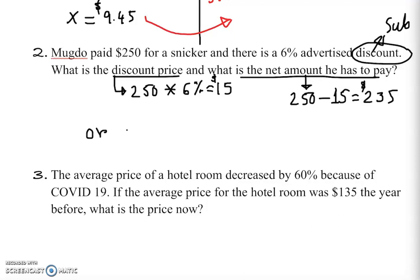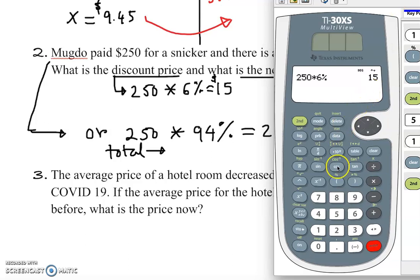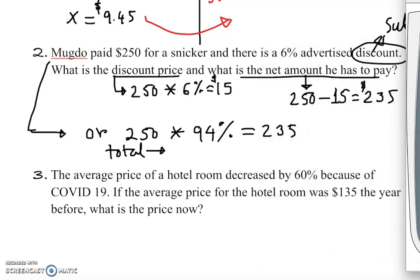Alternatively, since it's a discount, you can do 100% minus 6%, which equals 94%. Then multiply $250 times 94% — or 0.94 — which gives you $235 directly. This technique lets you skip the extra step and get the net total in one calculation.